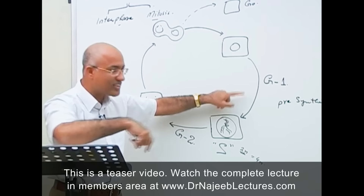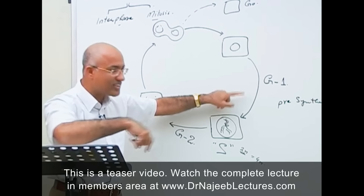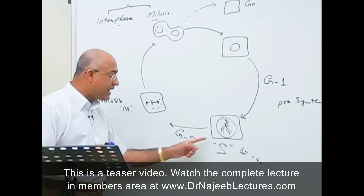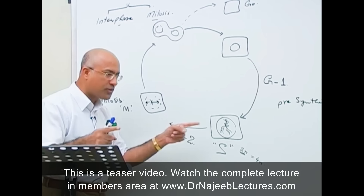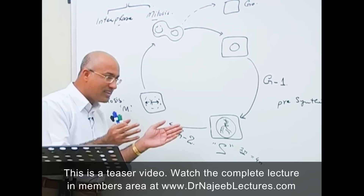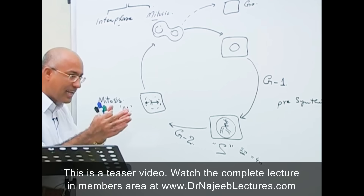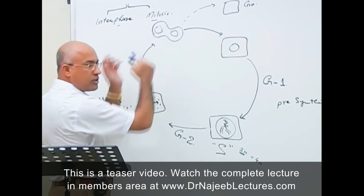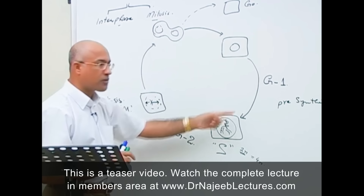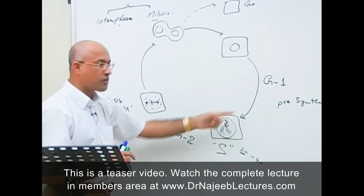In G1 phase, the cell is getting ready for synthesis of DNA — it is not yet dividing its DNA, so it is the pre-synthetic phase. Then DNA replication starts: S phase. Then the cell enters into G2, preparing how the replicated DNA should be divided for two cells — for example, making proteins related to spindle formation. Once those proteins required for division are made, the cell will start separating its chromatids and go through processes making two daughter nuclei and eventually two daughter cells — that is mitosis.